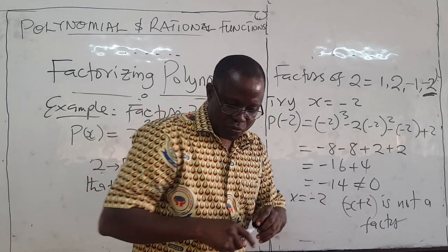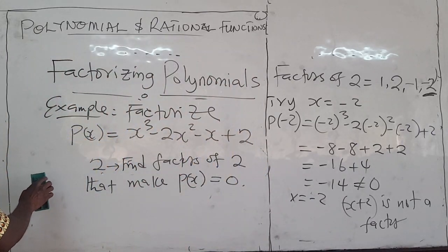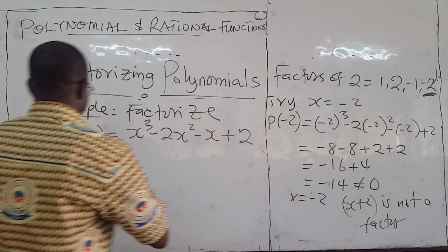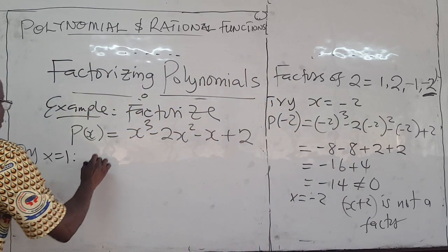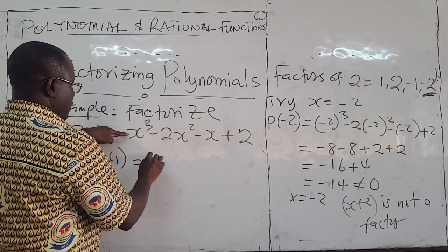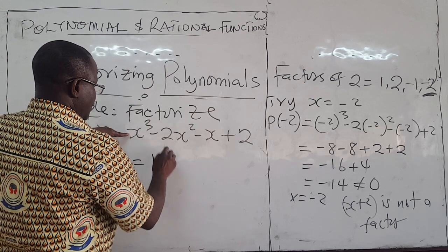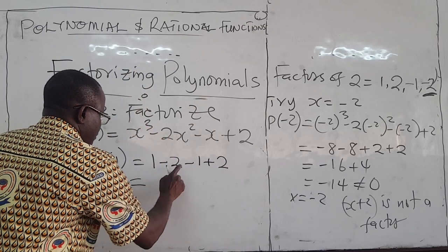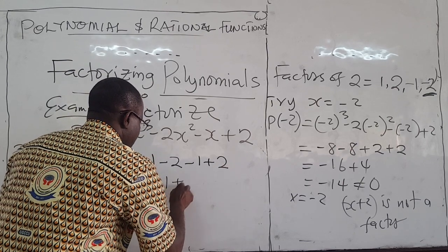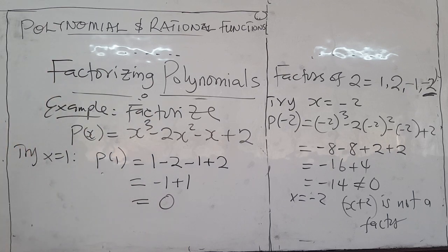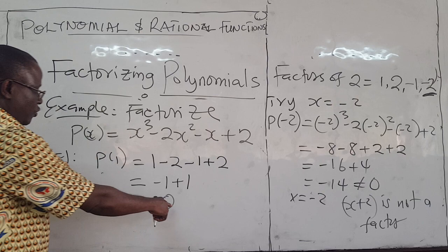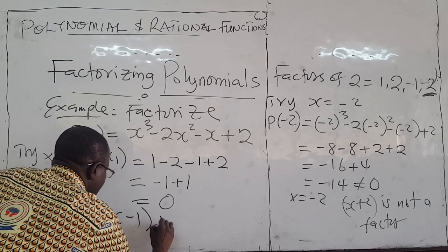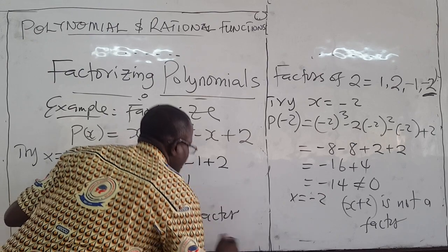We're looking for factors, so let's try a different one — x equals 1. p(1) equals 1 cubed minus 1 squared minus 1 plus 2, which gives 1 minus 1 minus 1 plus 2, equal to zero. So x equals 1 causes the polynomial to go to zero, which means x minus 1 is a factor of the polynomial.